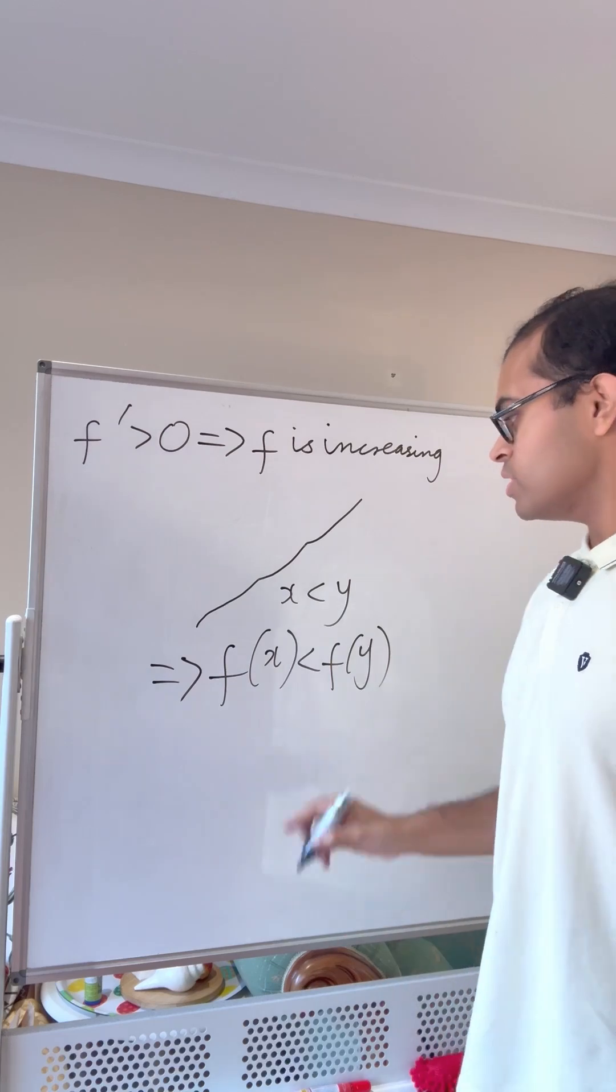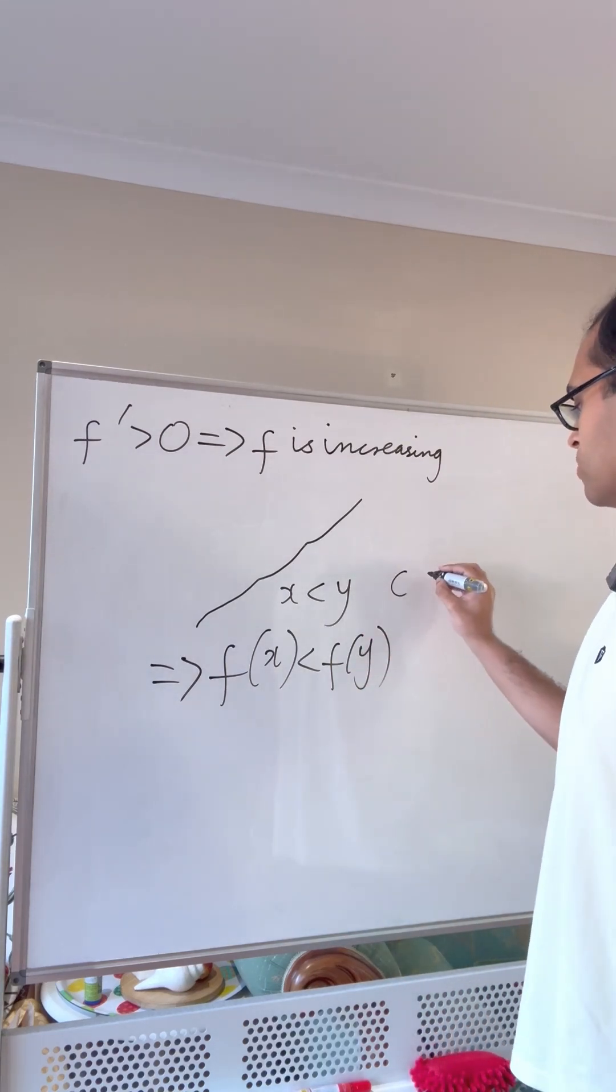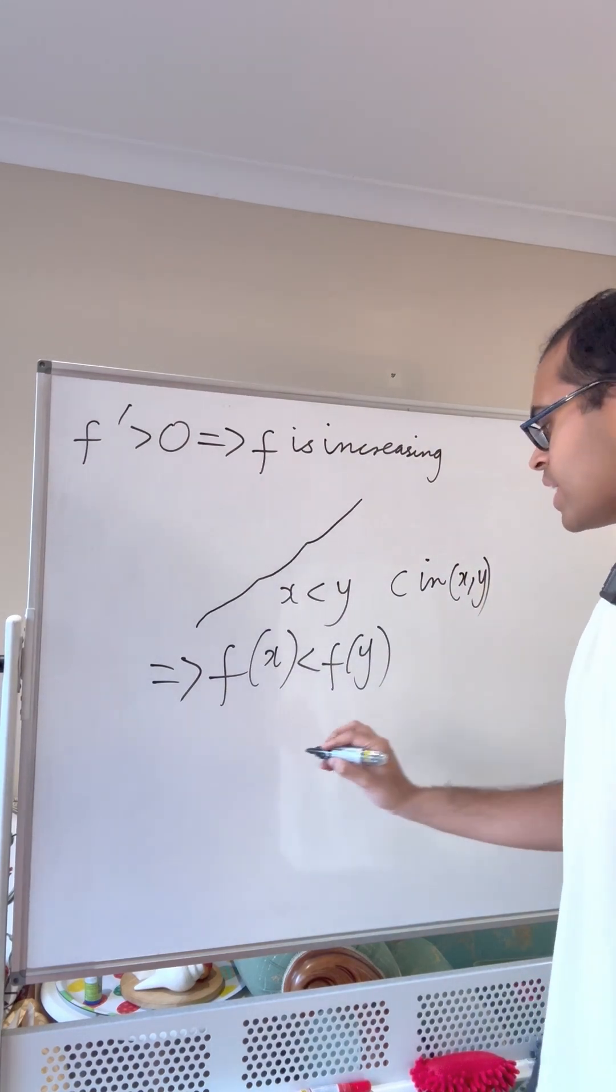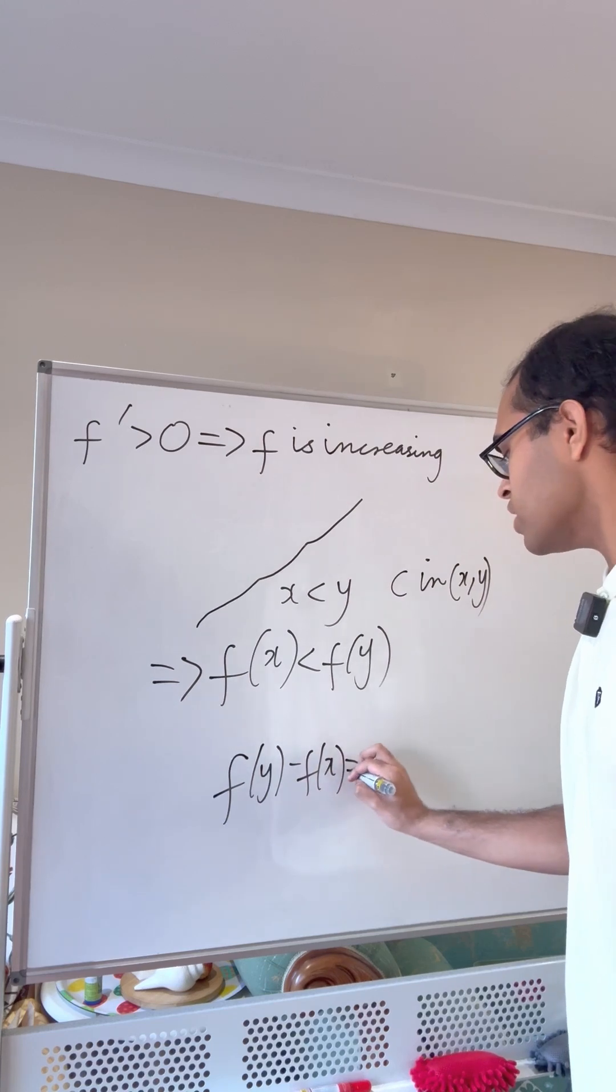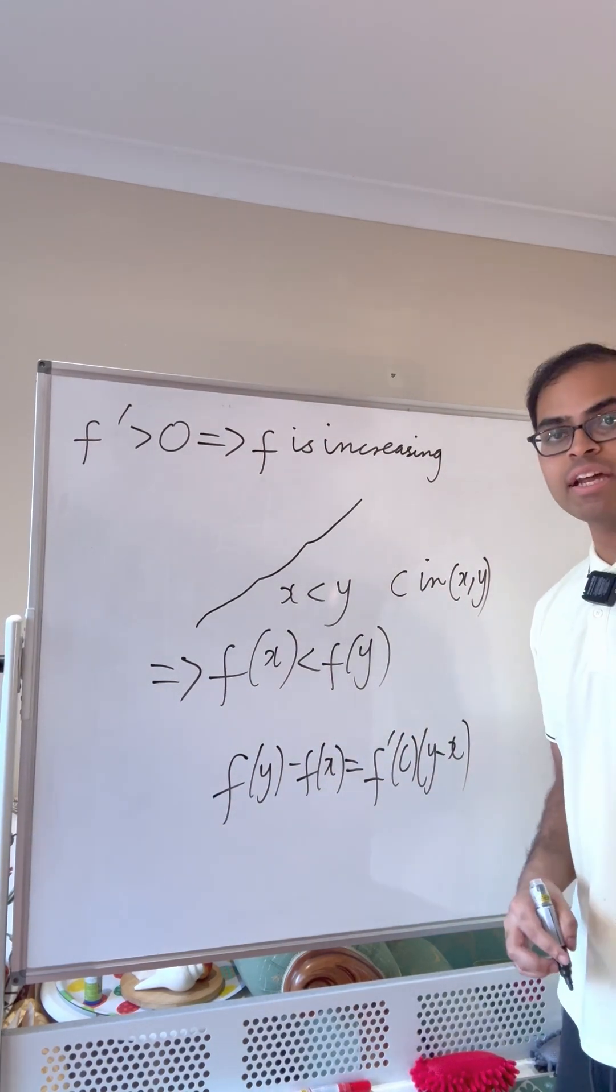We use the mean value theorem, which tells us there is a c inside the interval xy. Here f is differentiable, so there is a c inside the open interval xy, such that f of y minus f of x is equal to f prime of c times y minus x.